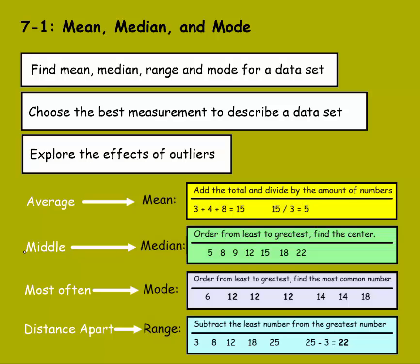Median stands for the middle, which is the middle number. To solve that, we order the numbers from least to greatest, then we find the center or the middle. So these numbers are already ordered from least to greatest. My method is to cross out the top and the bottom until you get to the middle. So we have 5, 22, 8, 18, 9, 15, and that leaves us 12 in the middle for our median.